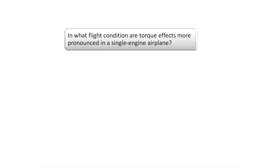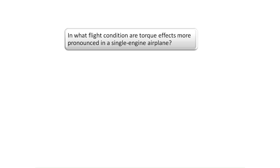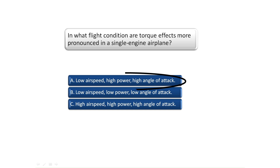In what flight condition are torque effects more pronounced in a single-engine airplane? Torque effects will be more pronounced at low airspeed, high power, and high angle of attack. See Chapter 5 of the Pilot's Handbook of Aeronautical Knowledge and Chapter 4 of the Airplane Flying Handbook to find out why torque effects are more pronounced at low airspeed, high power, and high angle of attack.